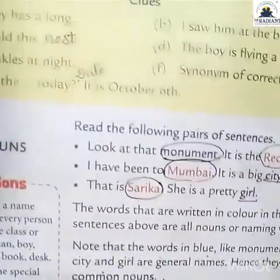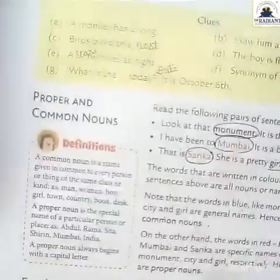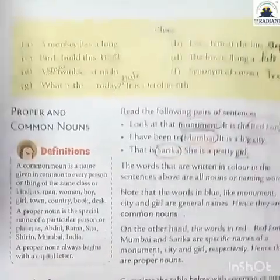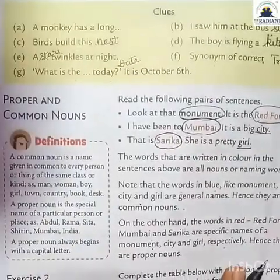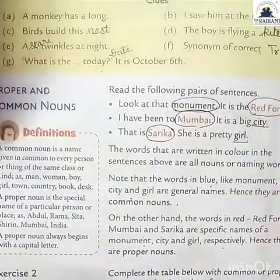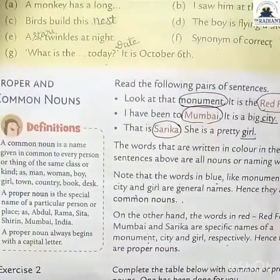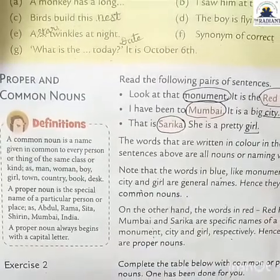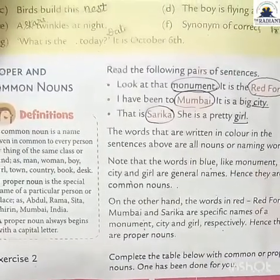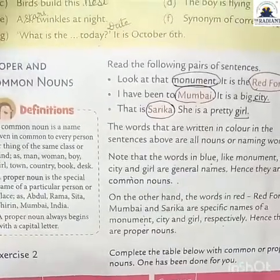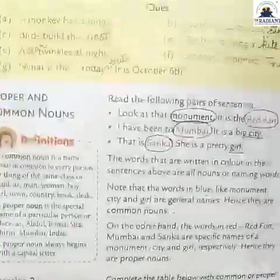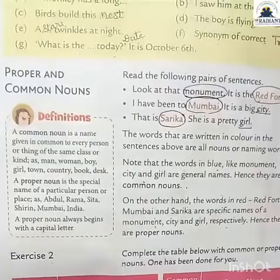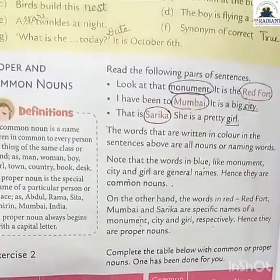Now we'll start with Exercise 2 — complete the table below with common or proper nouns; one has been done for you. Two boxes are given: one has common noun and we have to write the corresponding proper noun, or vice versa. For 'festival' as common noun, proper nouns are Eid and Holi. For 'month' as common noun, proper nouns would be August, June, April — any month name. For proper nouns the Bible and Guru Granth Sahib, the common noun is 'books'.